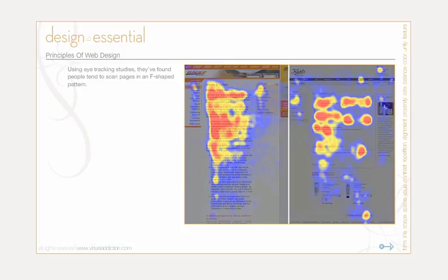Let's look at the F-shaped page scan. Using tracking studies, they found that people tend to scan pages in an F-shaped pattern. First, people read in a horizontal movement, usually in the upper area of the content — this forms the top part of the F. Then they move down the page and read across in a second horizontal movement, typically covering a shorter area, forming the second bar of the F. Finally, people scan the content's left side in a vertical movement, sometimes slowly and systematically, other times quickly. Consistently, people scan pages in this F pattern.